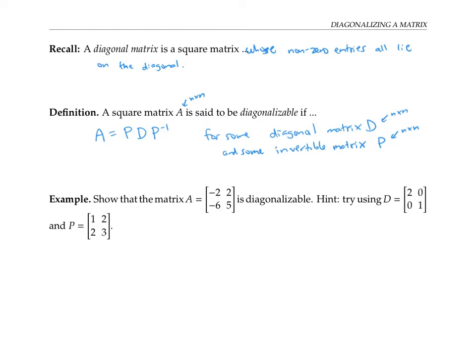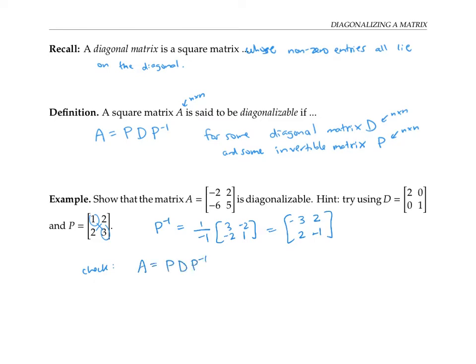In an example, we're asked to show that this two by two matrix is diagonalizable, and we're given a hint to use this diagonal matrix D and this matrix P, which hopefully is invertible. Recall there's a shortcut to finding the inverse of a two by two matrix: we swap the entries on the diagonal, negate the off-diagonal entries, and multiply by one over the determinant. The determinant is one times three minus two times two, which is negative one. Multiplying through by negative one gives us P inverse. Now we need to check that A equals P D P inverse.